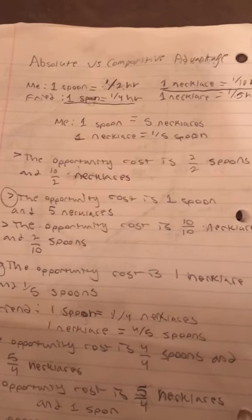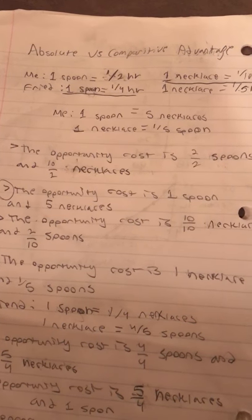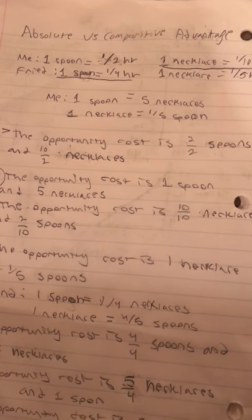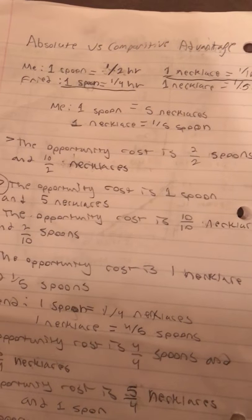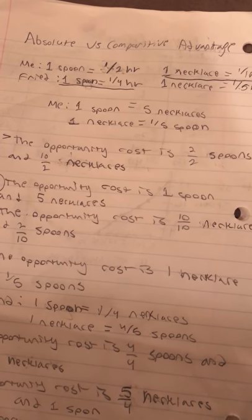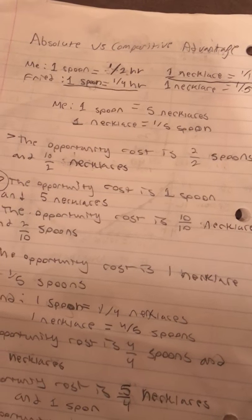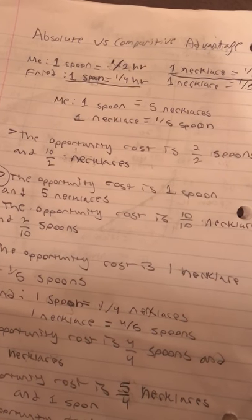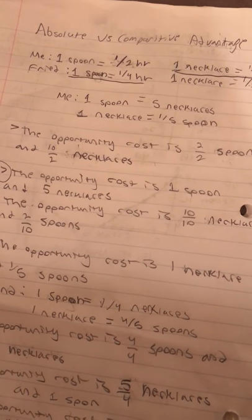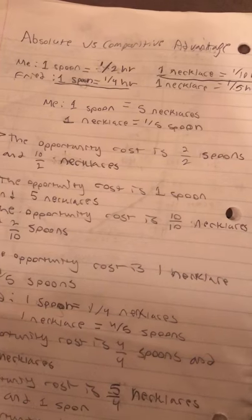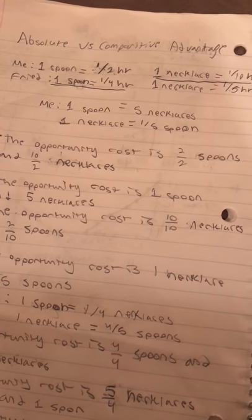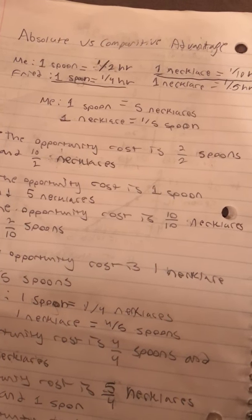So absolute versus comparative advantage. For me, for me to make one spoon, it only takes me half an hour. For my friend, it takes one-fourth of an hour. So as you can see, my friend is more efficient than I am because he can make more spoons with less time.